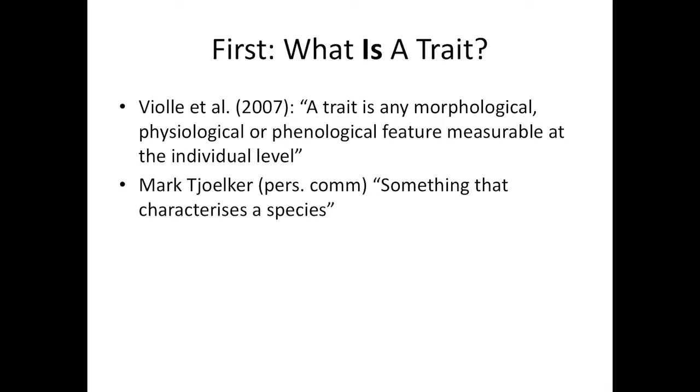I did a bit of sampling of people I work with to find out what they thought traits actually were. A lot of people came up with something like what Mark Chalker suggested: a trait is something that characterises a species — not just anything you can measure, but something quite specific to that species. Mark and I went off on a tangent about whether relative growth rate was a trait. It does characterise a species — some are fast, some slow — but you can't really measure it easily to show that.